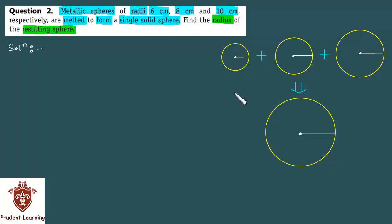Here in this question we are given 3 metallic spheres of radii 6 cm, 8 cm and 10 cm and these 3 spheres are melted to form a new sphere and we are required to find the radius of this resulting sphere.